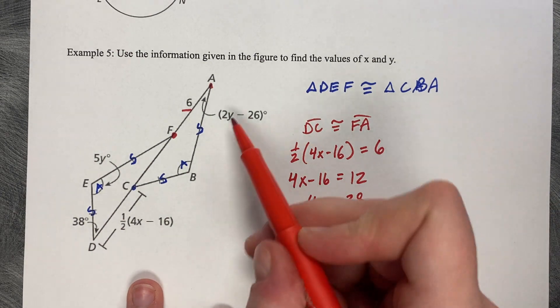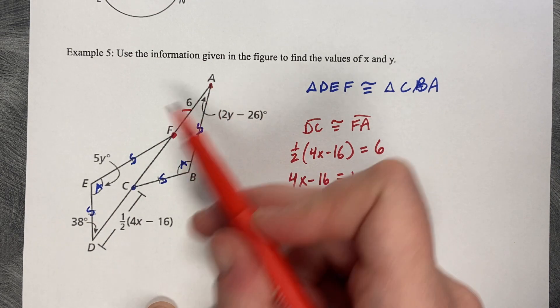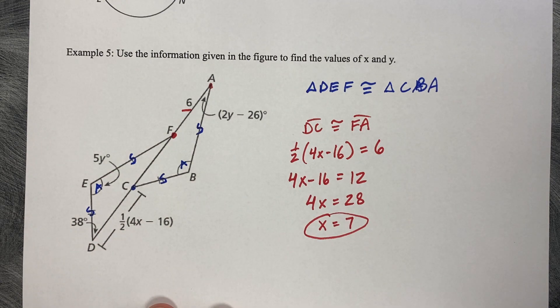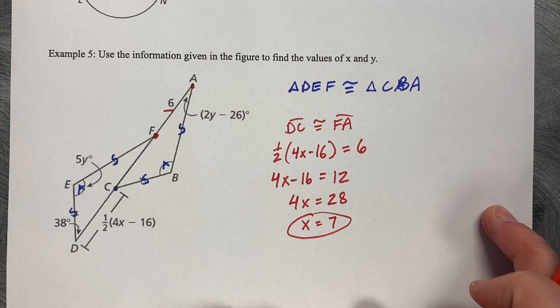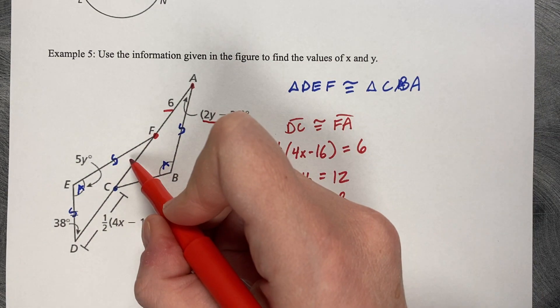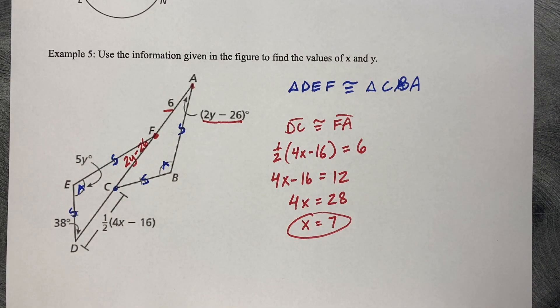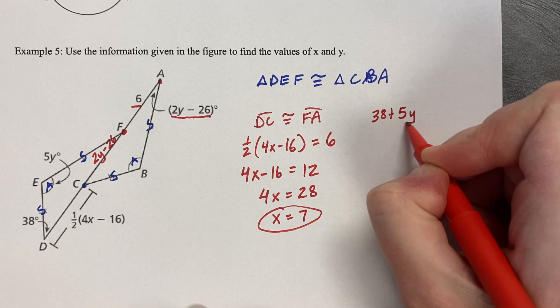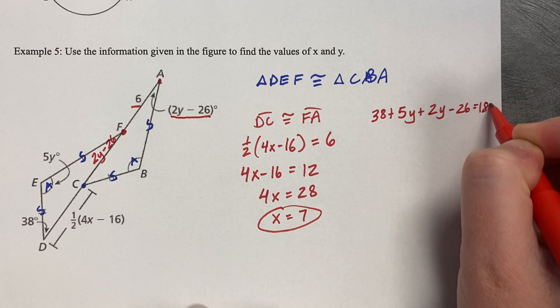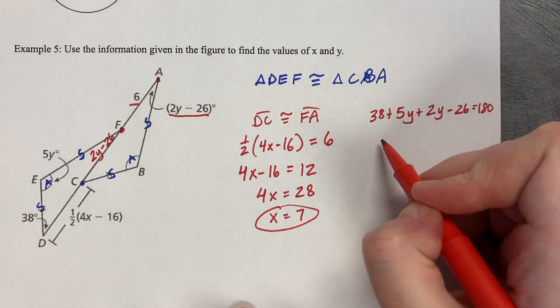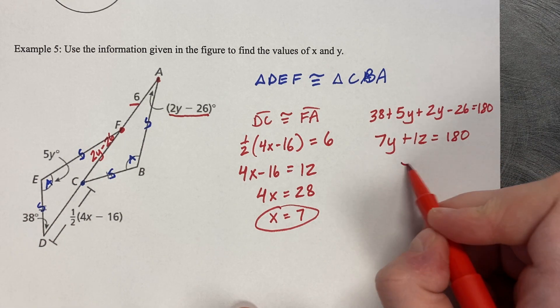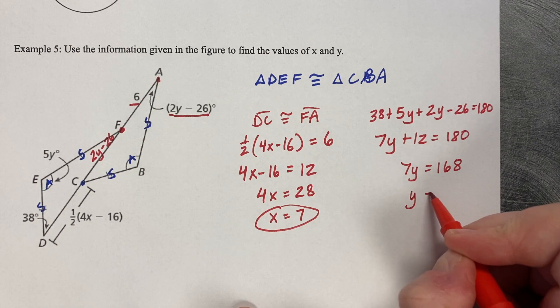To find y: it appears in angle A as (2y − 26) and in angle E as 5y, and we also know the third angle is 38°. Since three angles in a triangle sum to 180°, angle F corresponds to angle A, so: 38 + 5y + (2y − 26) = 180. Combining: 7y + 12 = 180. Subtracting 12: 7y = 168. Dividing by 7: y = 24.